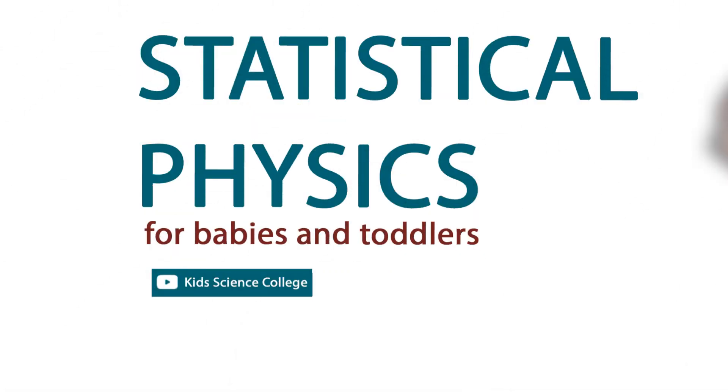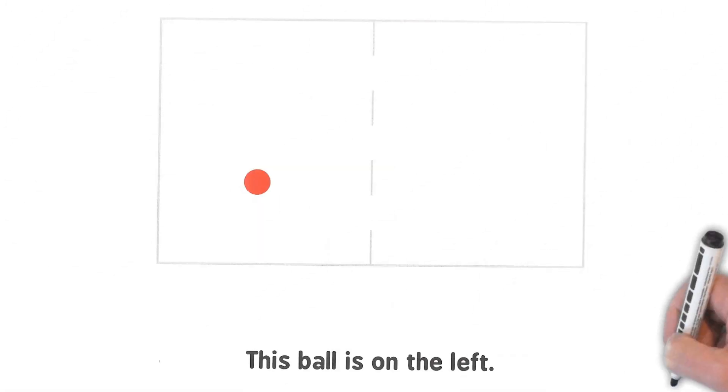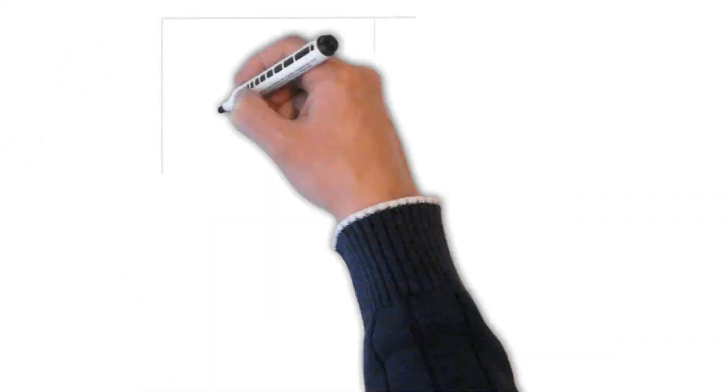Let's learn statistical physics. This is a ball. This ball is on the left. Now it's on the move. Now it's on the right.